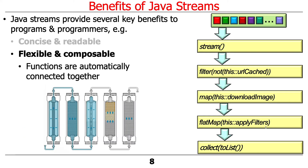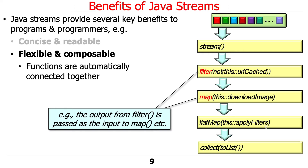Streams are also flexible and composable. Functions are automatically connected together — you can see how we connect them up, just like the flow of information through a water purification system. In particular, the output from filter will be piped into the input to map, and the output from map will be piped into the input of flat map. I'll talk about what flat map does later — it's a variant of map that can do a more powerful set of things.